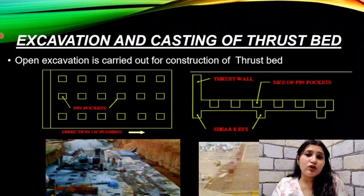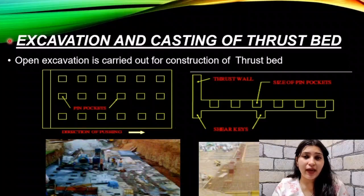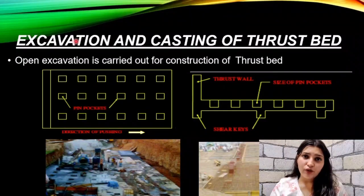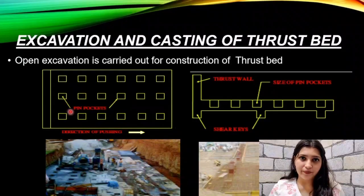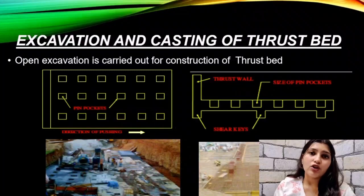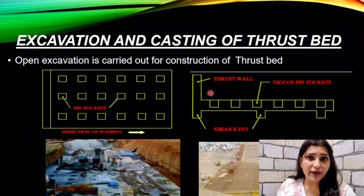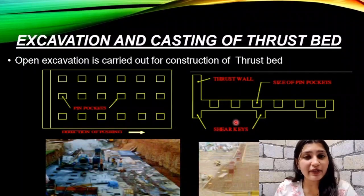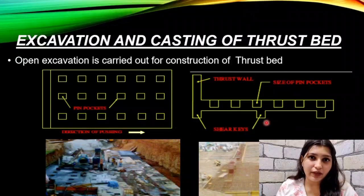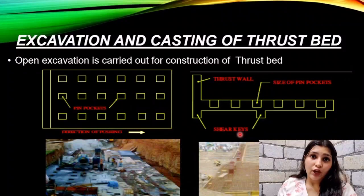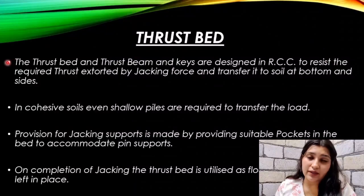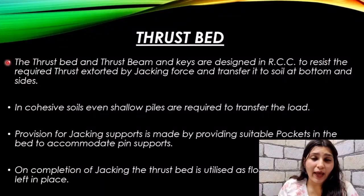The first two steps are excavation and construction of the thrust bed, as these two terms are related to each other. As you can see in the left-hand side figure, there is open excavation and small pits excavated which we call pin pockets. After the excavation, we construct the thrust bed. In the thrust bed, thrust beams and keys are designed in RCC. The shear keys are designed to resist shear actions. We provide jacking supports by providing suitable numbers of pockets in the thrust bed to accommodate pin supports. After jacking, the thrust bed can also be used as a floor bed.